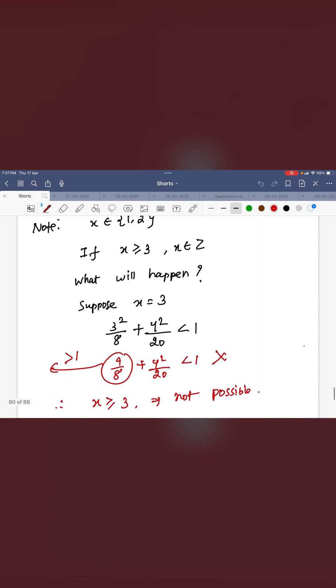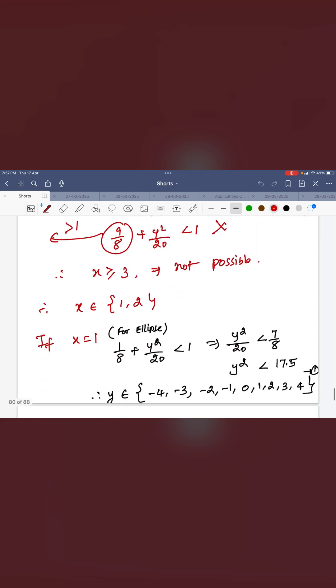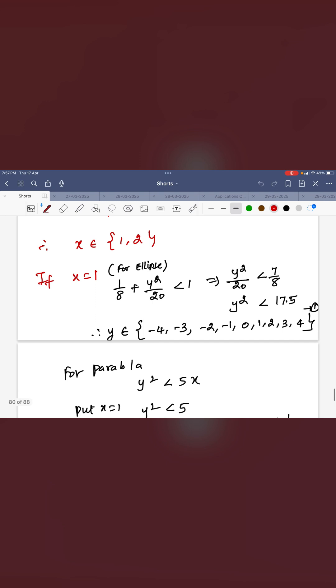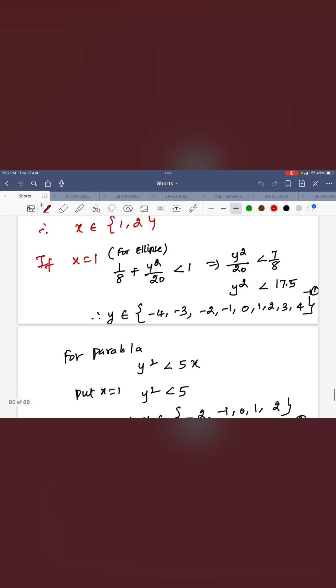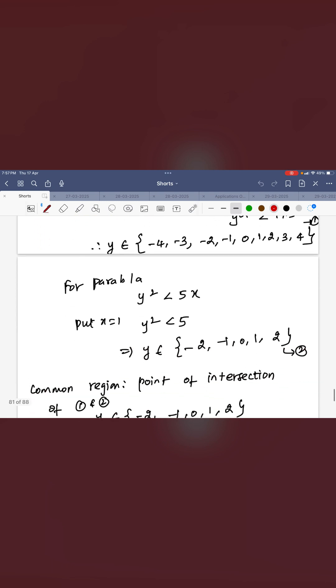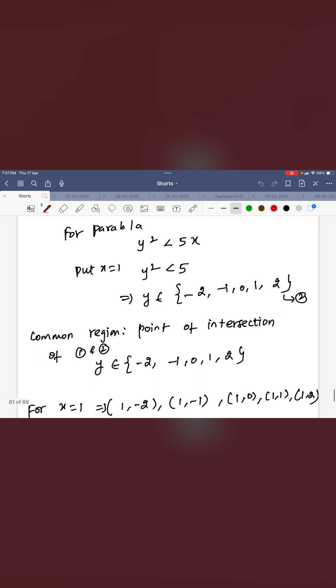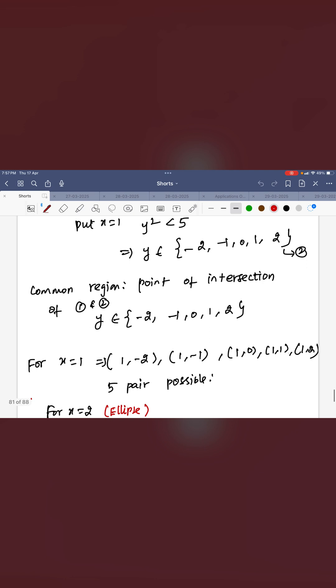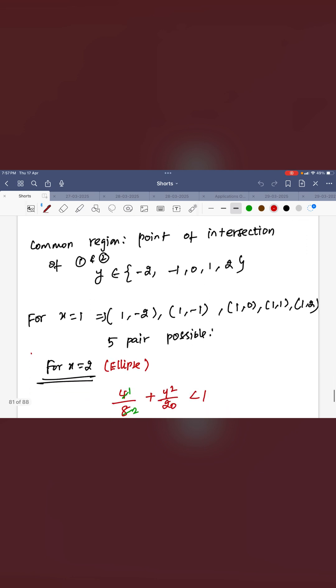If you take x is more than 3, it will not satisfy the inequality here. Suppose if x equal to 1, the y will be minus 4 to 4 for ellipse. If x is equal to 1 for parabola minus 2 to 2, the intersection will be minus 2 to 2. You can see all order pairs will be 5 pairs possible.